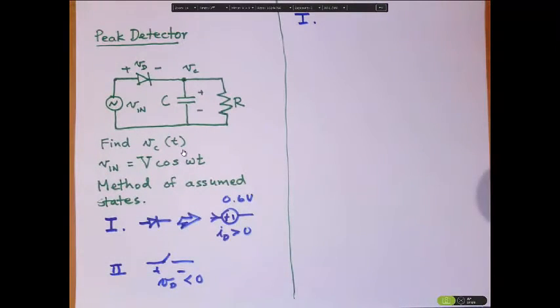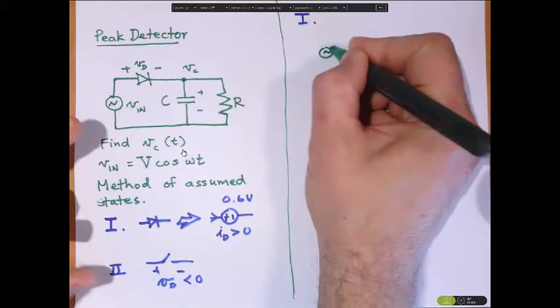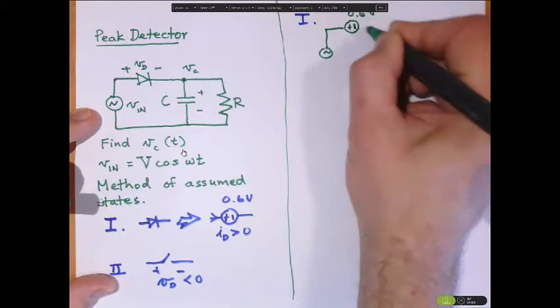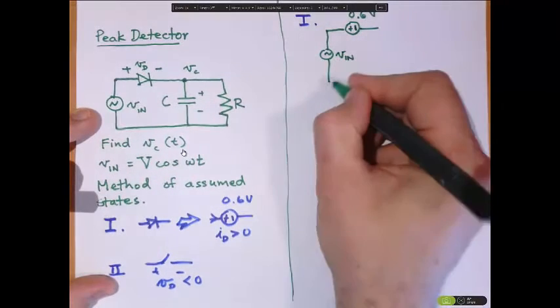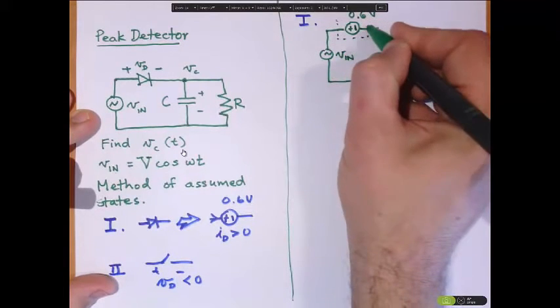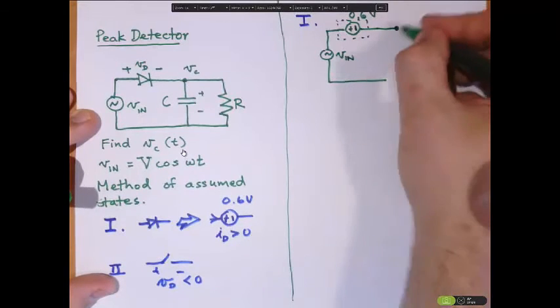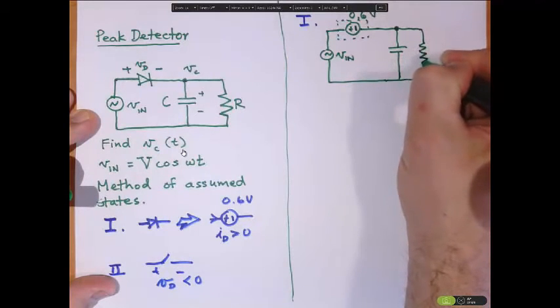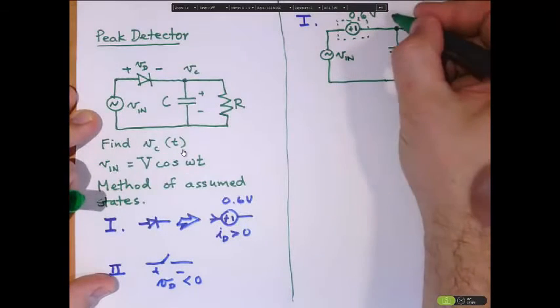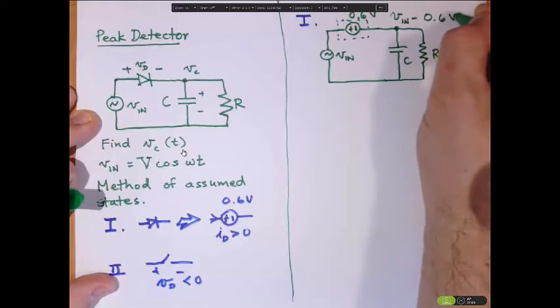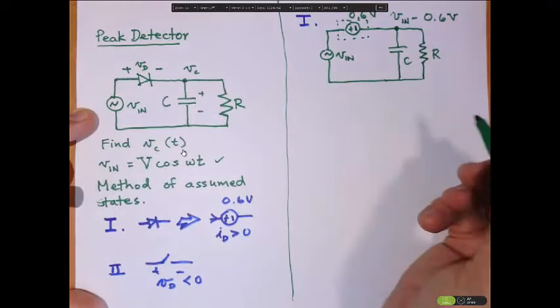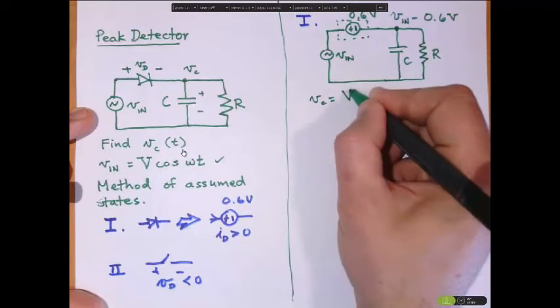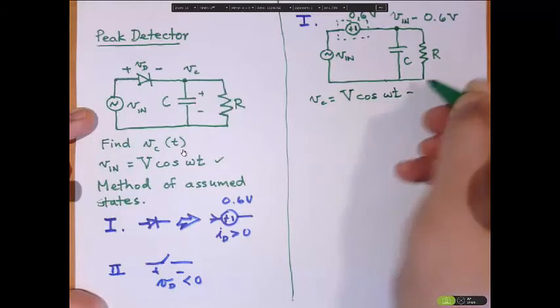So let's deal with state number one first. In state number one, we're just going to take the input and we're going to replace it with this voltage source. And if this is an input voltage, and now this is the diode in state one, then the voltage at this node, that's the capacitance voltage, is going to just be the input voltage minus that 0.6 volts. And so if we have this cosine omega t term, then we'll end up with Vc is equal to V cosine omega t minus 0.6 volts.